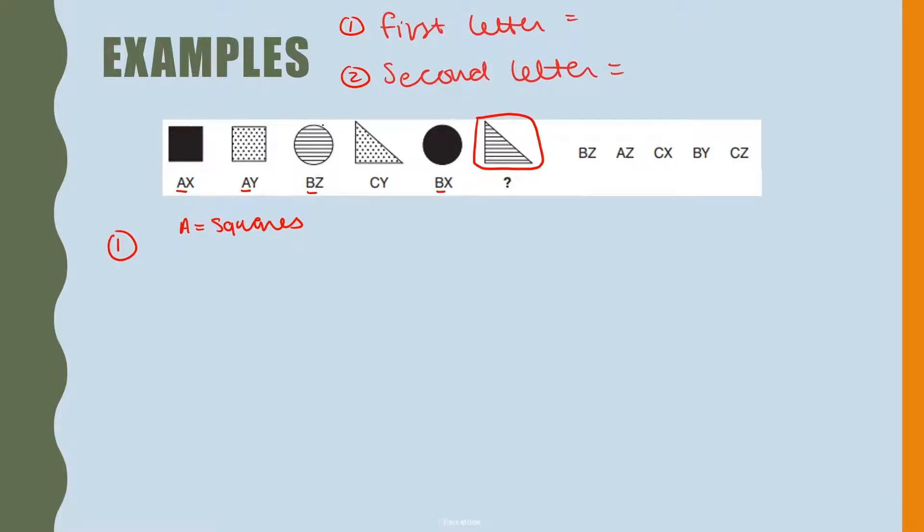Let's have a look at B. What do we recognize? Both of them have circles. So now we know the first letter for this question corresponds to the shape.